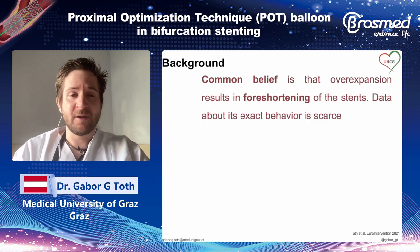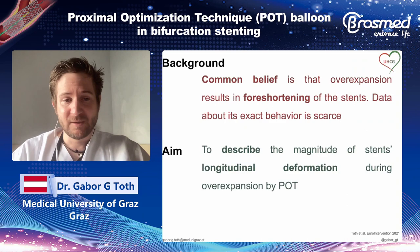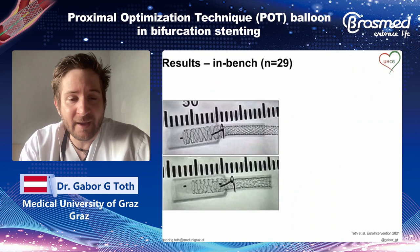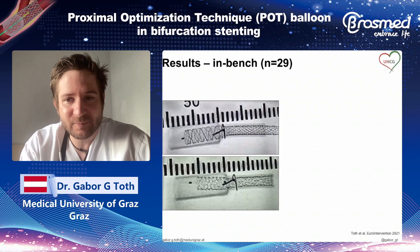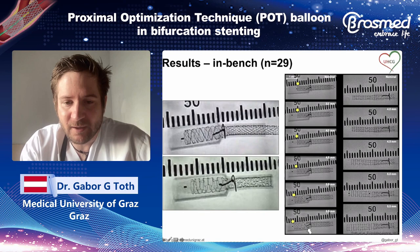There is a common belief that by overexpansion most stents get shortened, and we wanted to investigate this shortening phenomenon with overexpansion to better understand how it happens. We performed bench testing to better describe and understand this longitudinal deformation by overexpansion by POT. A very important and interesting observation was that by overexpansion, by proximal optimization, stents get rather elongated — and this elongation, as you can see on the left side, is not negligible; it's already a couple of millimeters.